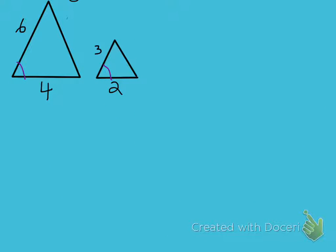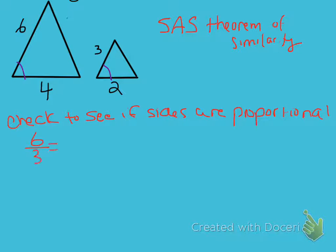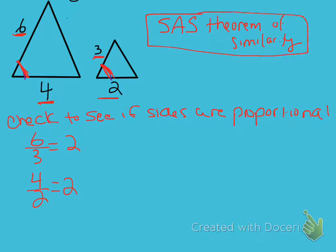Let's look at an example of side-angle-side similarity. First, we have to check if our sides are proportional — remember, for similarity the sides must be proportional, not congruent. Checking our scale factor: 6 over 3 equals 2, and 4 over 2 equals 2. So we know this side is proportional to this side, this side is proportional to this side, and the included angles are congruent — that's why we can use the side-angle-side theorem of similarity.